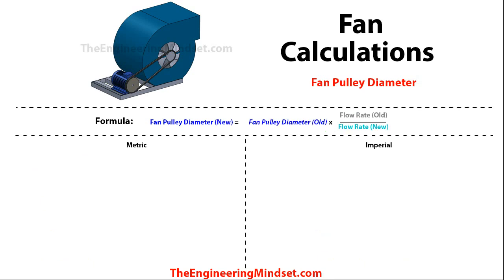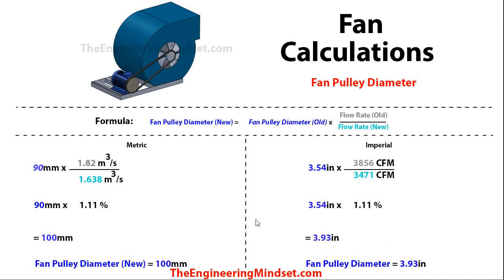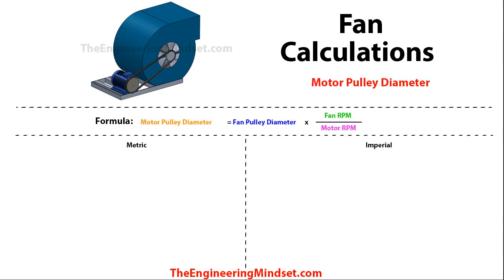Another way to calculate this is if the flow rate has changed — say half the floor has been cleared and you want energy savings. The formula is: new fan pulley diameter = old fan pulley diameter × (old airflow rate ÷ new airflow rate). Using a 10% reduction from the design data, the division gives a ratio of 1.11. Multiplying by the original fan pulley diameter gives a new diameter of 100 mm (3.93 inches).